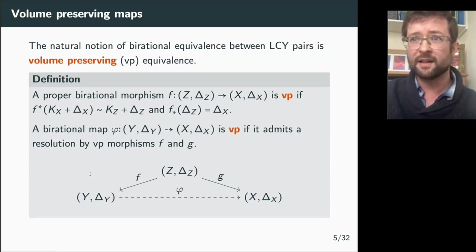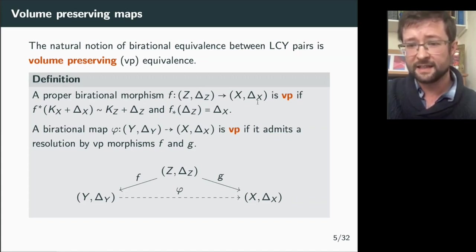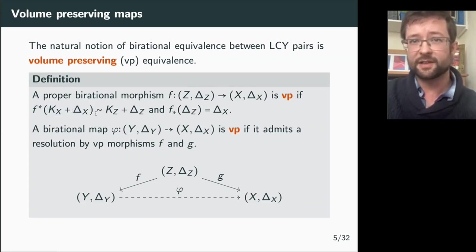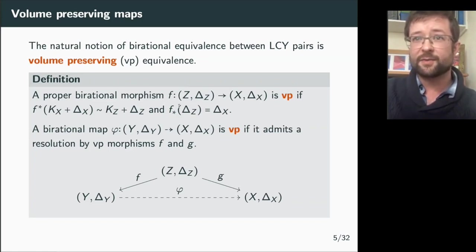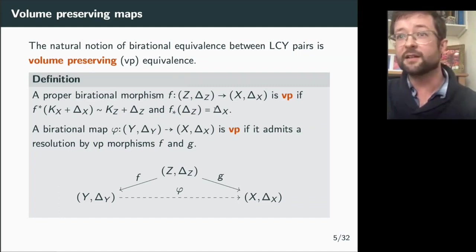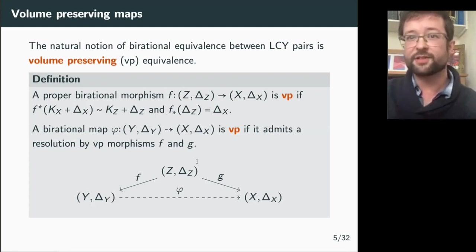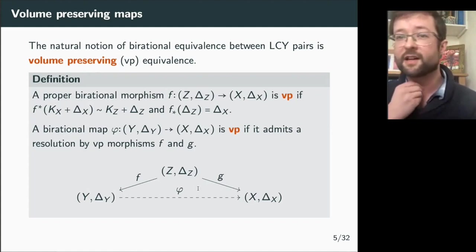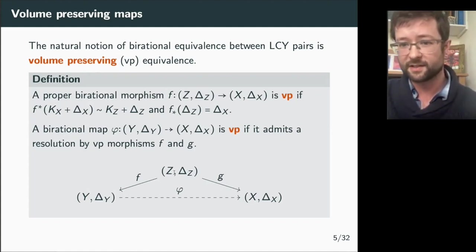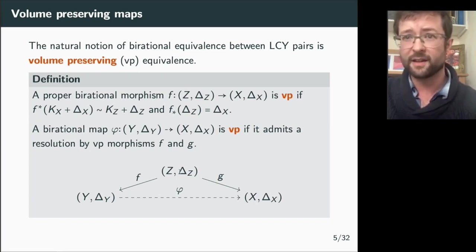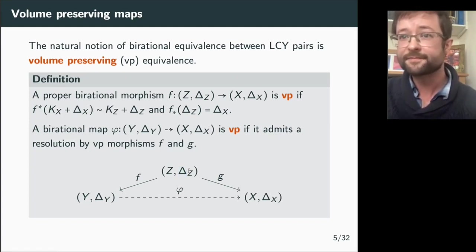A proper birational morphism from one pair to another is volume-preserving if pulling back K_X plus delta_X gives K_Z plus delta_Z — which is trivially satisfied since both are linearly trivial — and pushing forward the boundary from upstairs gives the boundary downstairs. A birational map is volume-preserving if you can resolve it by birational morphisms. Note that the intermediate space Z may not itself be log-Calabi-Yau, since the boundary divisor need not be effective.